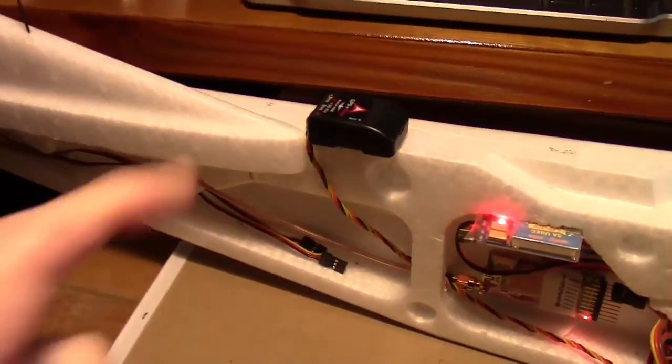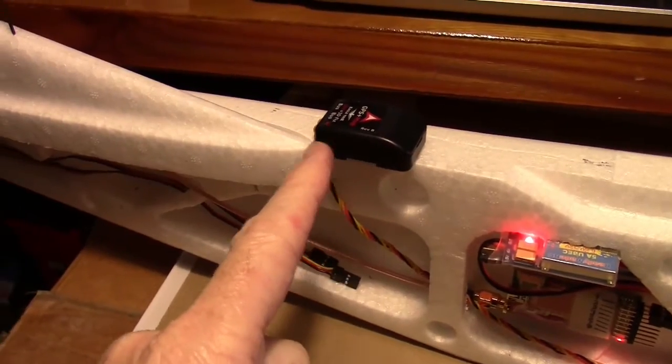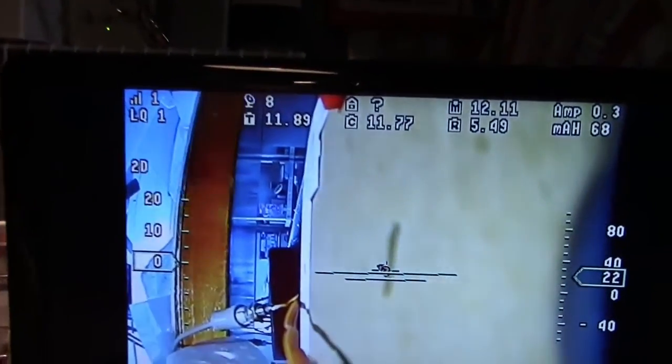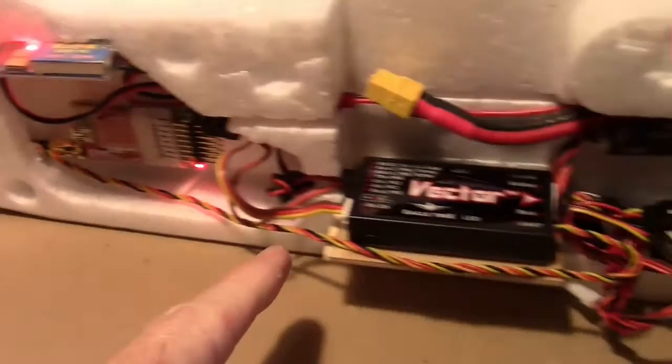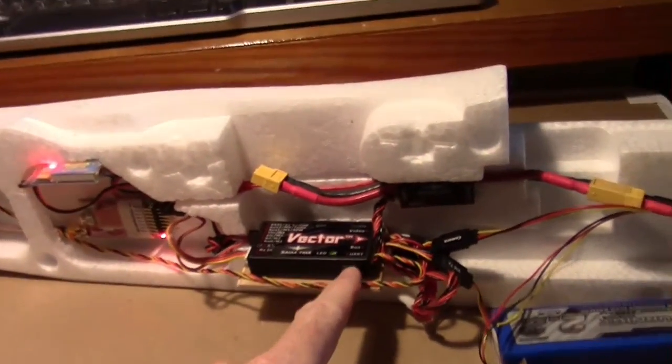So I decided to mount the GPS right here in front of the vertical stabilizer like that, and I got eight satellites down here in the basement, seems to be working. I just ran the wire down through here to the vector right there.